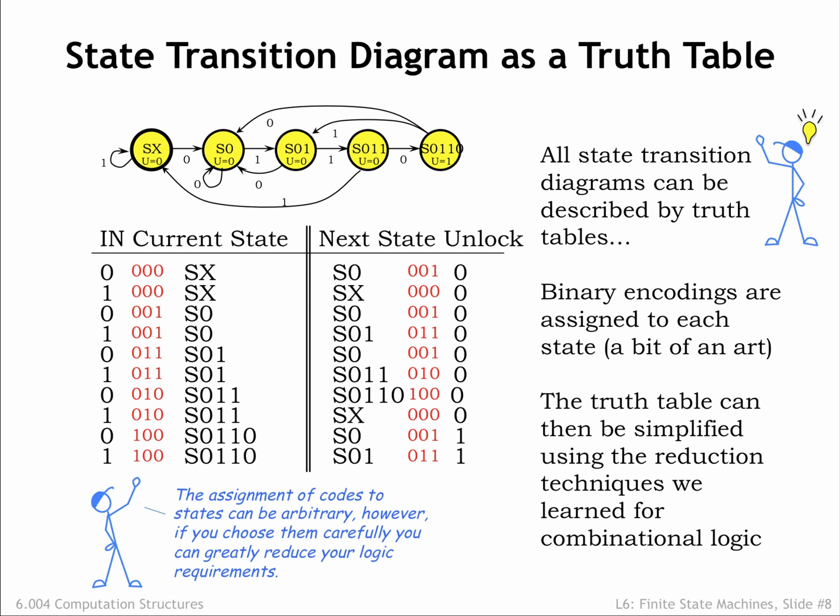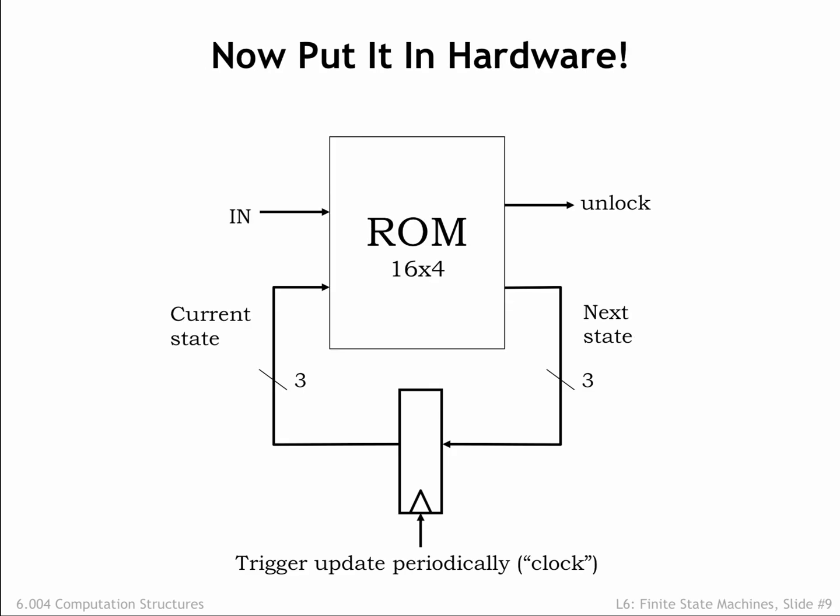Of course, we can take the easy way out and simply use a read-only memory to do the job. In this circuit, a read-only memory is used to compute the next state and outputs from the current state and inputs. We're encoding the 5 states of the FSM using a 3-bit binary value, so we have a 3-bit state register. The rectangle with the edge-triggered input is schematic shorthand for a multibit register. If a wire in the diagram represents a multibit signal, we use a little slash across the wire with a number to indicate how many bits are in the signal. In this example, both current state and next state are 3-bit signals.